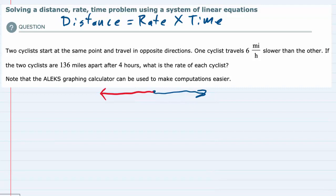Since we are looking for the rate of each cyclist, I'm going to call cyclist 1, I'm going to say that he has a rate of x miles per hour.